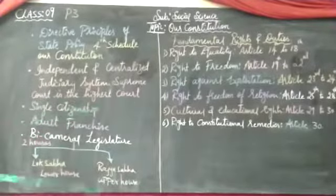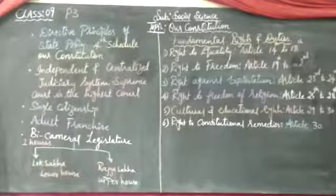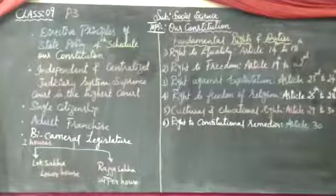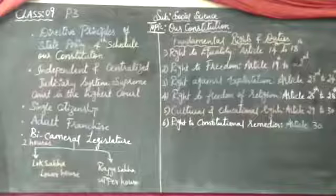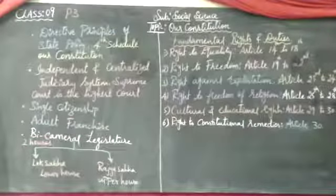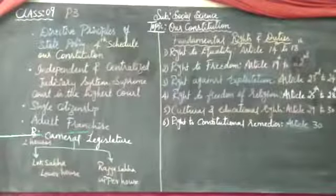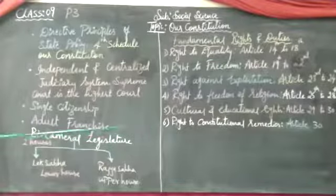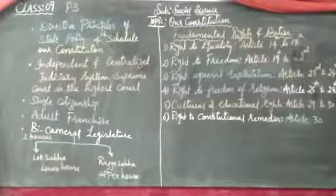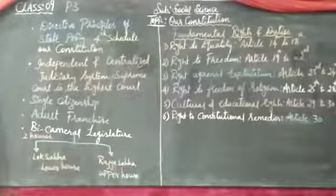Fourth is the Right to Freedom of Religion. In secularism, there is no national religion. A person can be of any religion and can convert to any religion. This is covered under Article 25 to 28. Fifth is Cultural and Educational Rights. According to the 42nd Amendment of 2002, parents are responsible for children's education from 6 to 14 years compulsory. Culture involves taking part in many activities.